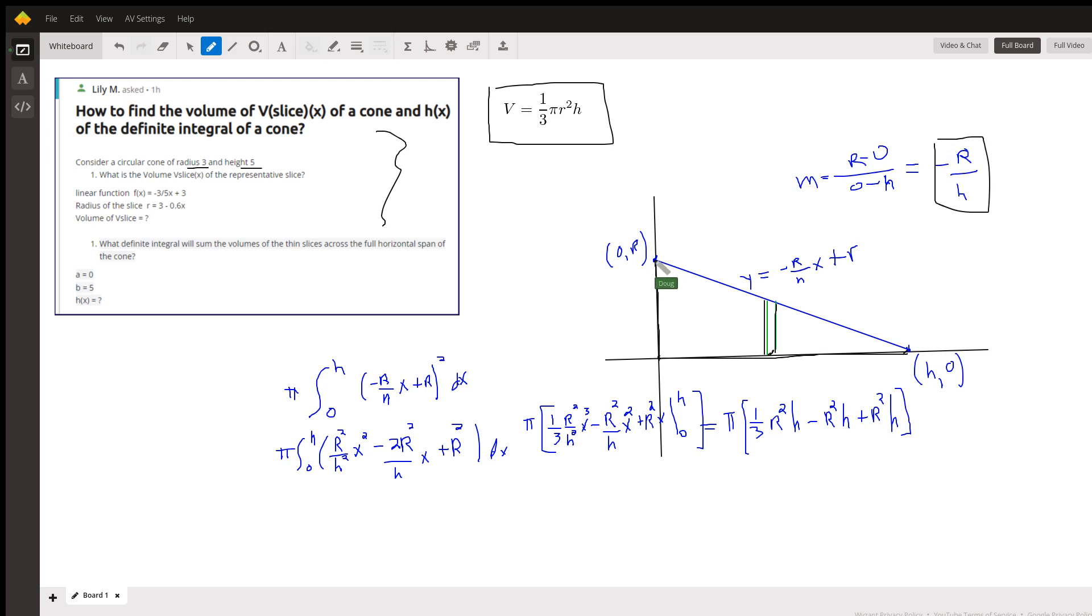And the y-intercept is at 0r. So the equation of that hypotenuse is negative r over h times x plus, I'll go to capital R.